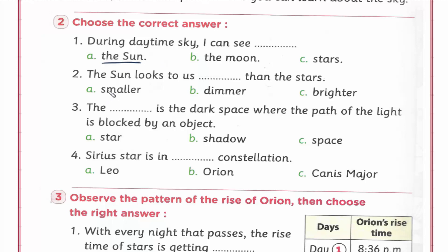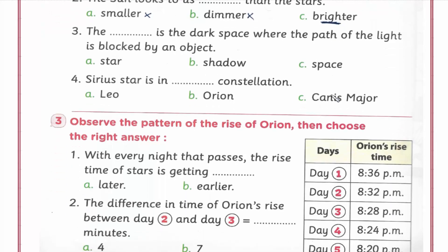Number two: The sun looks to us - ايه - than the stars. الخيارات: smaller than stars - اصغر من الستارز - طبعا لا. Dimmer - اقل إضاءة من الستارز - طبعا لا. Brighter - بتلمع اكتر من الستارز - ايوه طبعا. الشمس بتطلع وبتنور الدنيا كلها، لكن الستارز حتى وهي موجودة الدنيا بتبقى ظلمه.